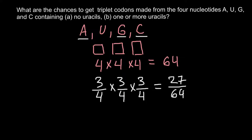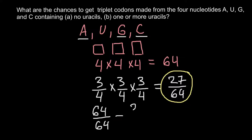So 27 out of 64 variants exist where we can make a triplet with no uracil. This is our answer for the first question. To answer the second question — the chances to get a triplet with one or more uracils — we use the formula: 64/64 minus 27/64, where 27 is the number we got answering the previous question, representing triplets that contain no uracils.